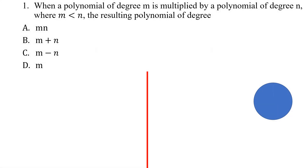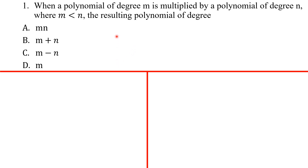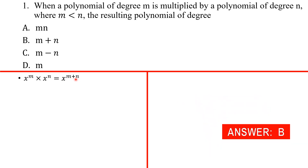When a polynomial of degree m is multiplied by a polynomial of degree n, where m is less than n, the resulting polynomial is of degree m plus n. Degree m simply means the highest power of x in that polynomial is m. When you multiply it with a new polynomial whose highest power is n, you get a new polynomial whose highest power is m plus n — that's the degree. So our answer is B.